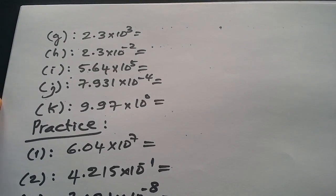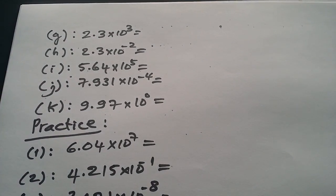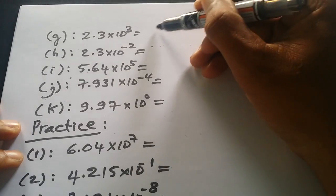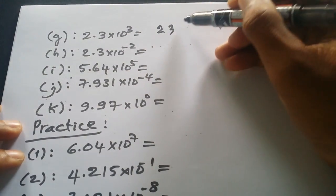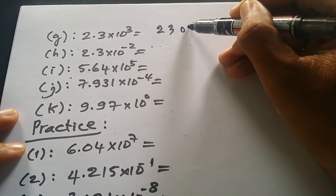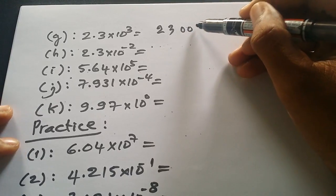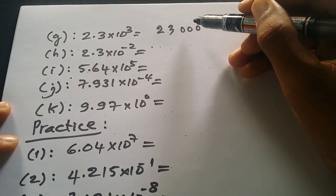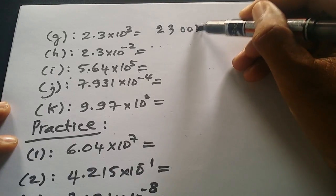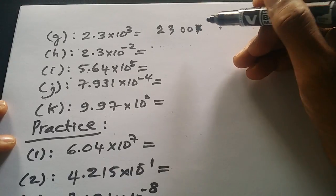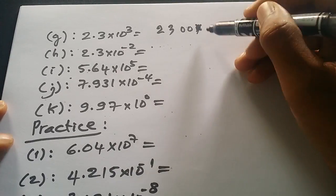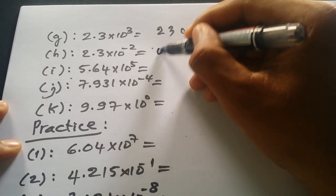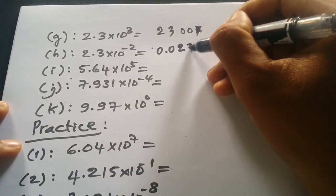By this ordinary number you can write as 2300 times. Yes, in here because they have three times we omit the zero. How about this, 0.023.